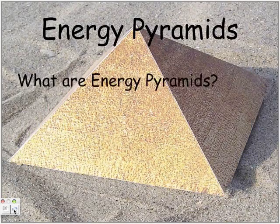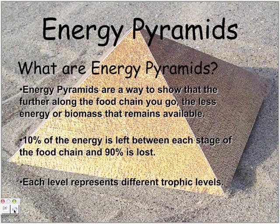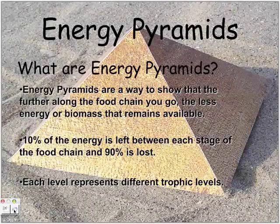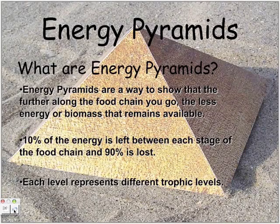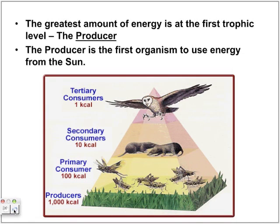Energy pyramids — what are they? Energy pyramids show that the further along the food chain you go, the less energy, which is biomass, remains available. As mentioned, 10% of the energy is left at each stage and 90% is lost through heat and waste. Each level of the energy pyramid represents the different trophic levels. The greatest amount of energy is at the bottom because it gets its energy straight from the sun and doesn't depend on anything.